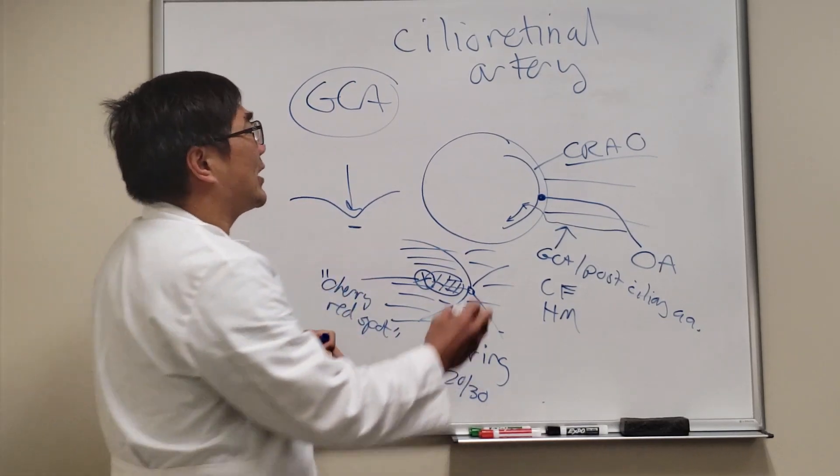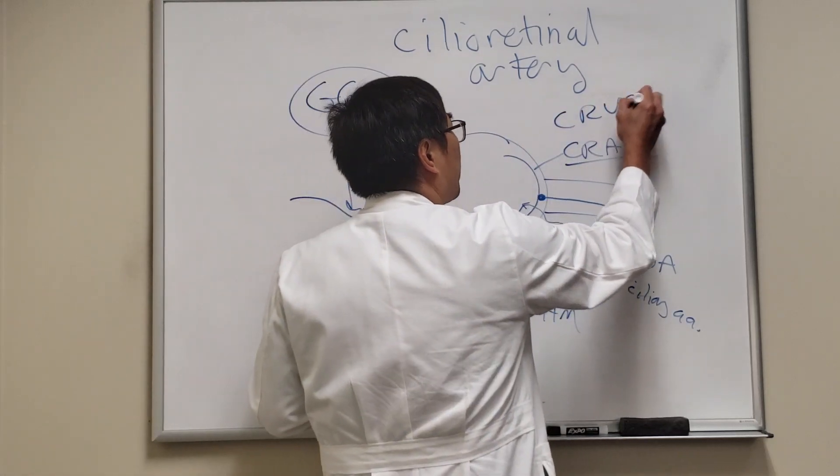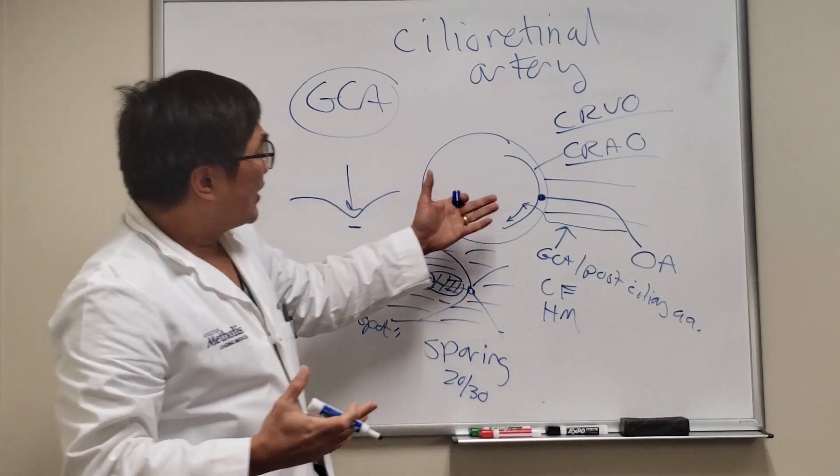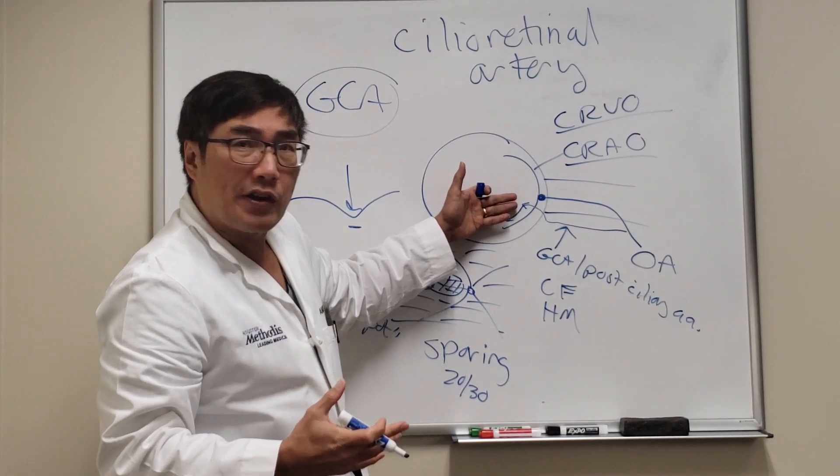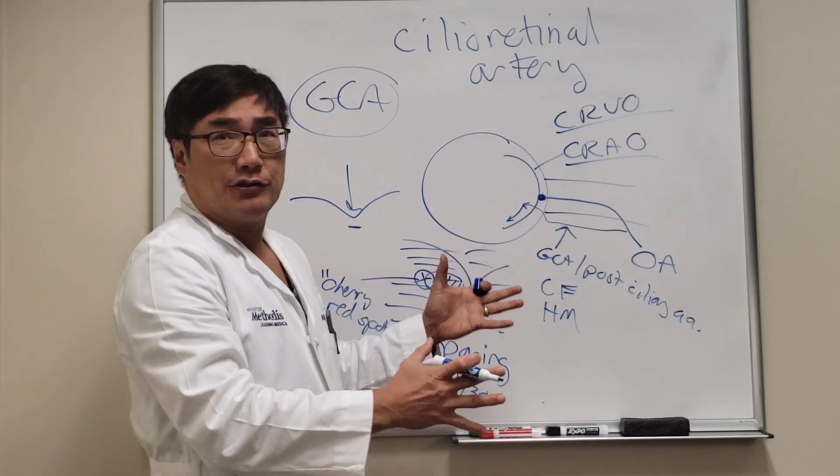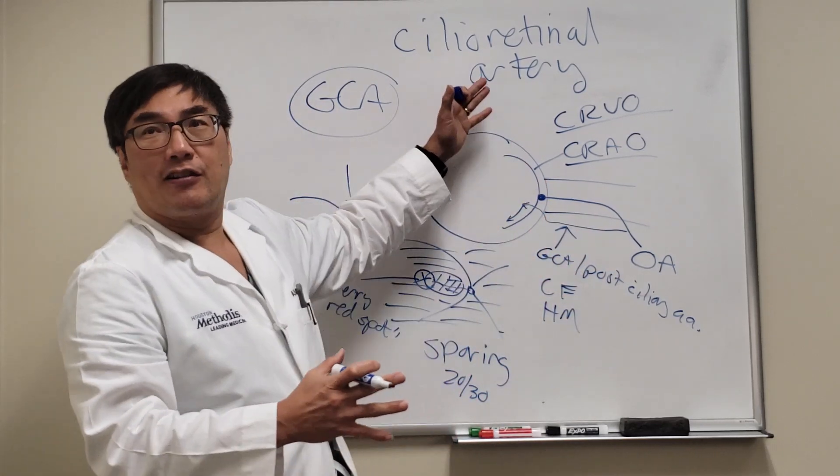The last thing I'll tell you is if you have a central retinal vein occlusion, that increases the back pressure in the venous system. Because the perfusion pressure is actually lower in the cilioretinal artery than in the central retinal artery, just having a vein occlusion could cause a cilioretinal artery occlusion.